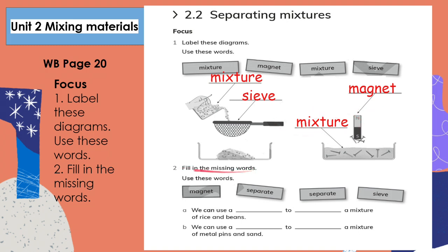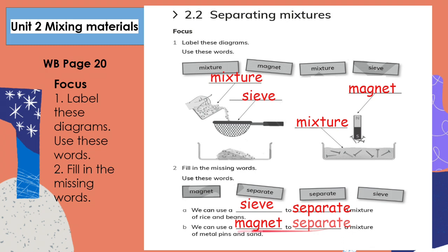Number two, fill in the missing words. Use these words: magnet, separate, and sieve. Letter A: We can use a sieve to separate a mixture of rice and beans. The grains of rice are smaller than the beans, so they will be able to go through the sieve into the container below. The beans are much bigger and will get caught in the sieve. Letter B: We can use a magnet to separate a mixture of metal pins and sand. Metal pins are made of steel and will be attracted to the magnet, separating them from the sand left in the container.